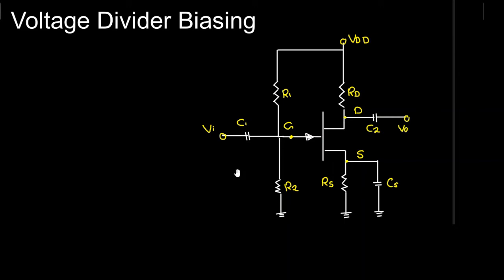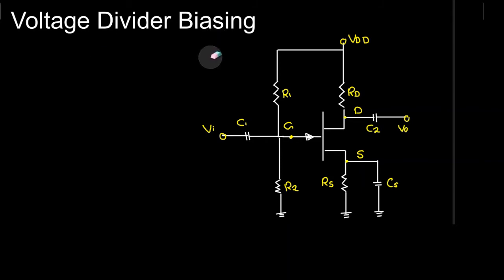Bismillahir Rahmanir Rahim. In this video we are going to perform another AC analysis of a JFET configuration, and this time the configuration is the voltage divider configuration. Again I have coupling capacitors C1, C2, and CS.